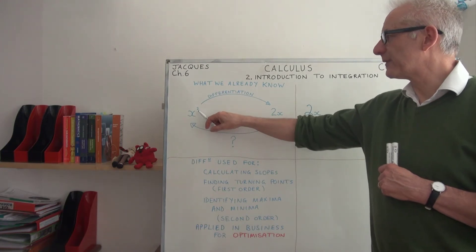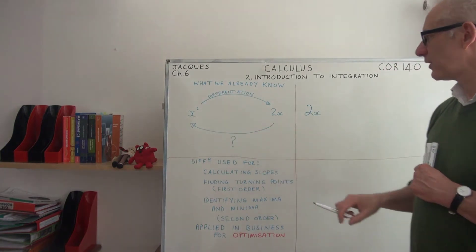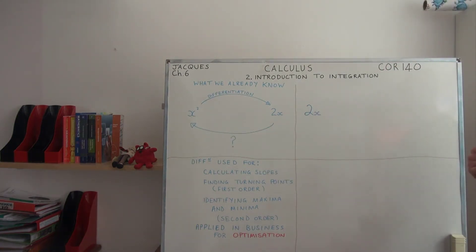A reverse operation would seem to be that we can increase the power on x and then divide by the new power. Let's see what happens when we apply that to 2x.